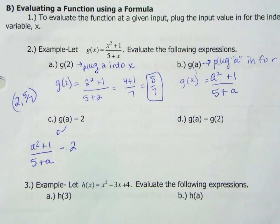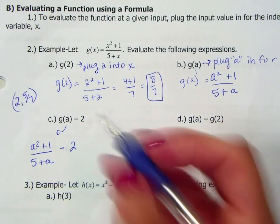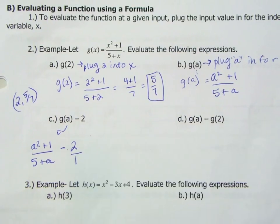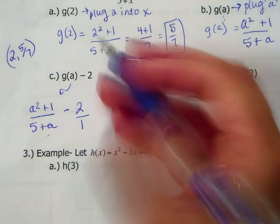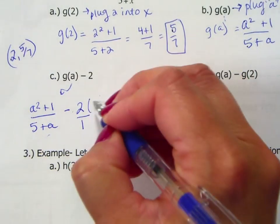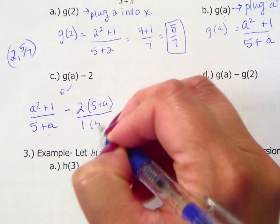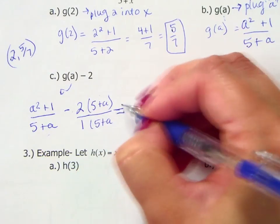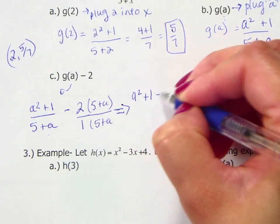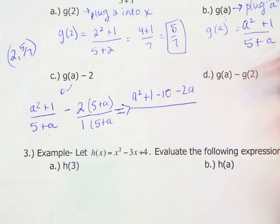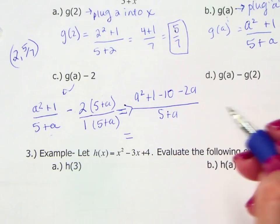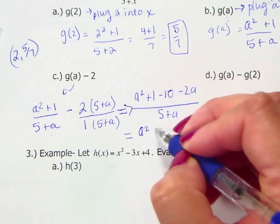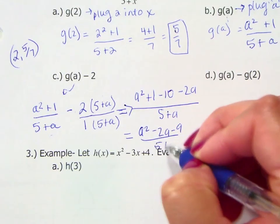We could probably simplify this if we made a common denominator. So let's go ahead and do that. So if I put that over 1, the common denominator here would be 5 plus a. This term already has it, so I need to multiply top and bottom by 5 plus a. So a squared plus 1 minus 10 minus 2a is all over 5 plus a. And then just simplify your numerator a little bit. a squared minus 2a minus 9 over 5 plus a.